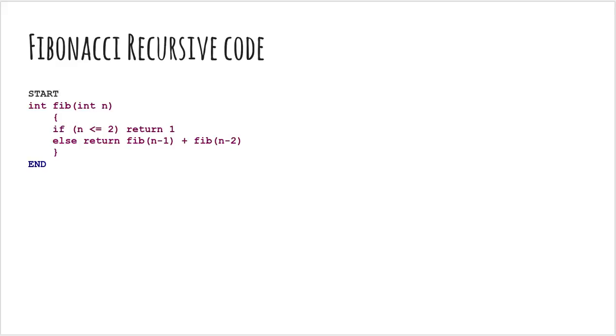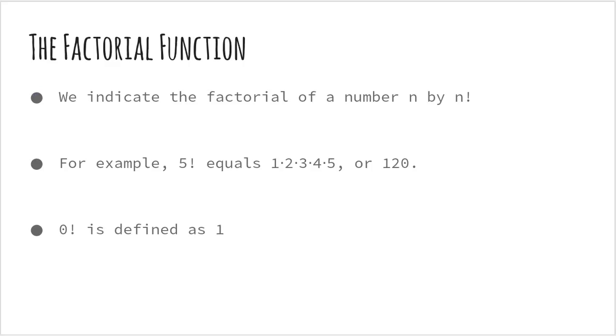So, we have a base condition that if n is less than or equal to 2, return 1. This essentially means that we are initializing F(0) to 1 and F(1) to 1. And if it's a larger number, we return the Fibonacci of n-1 plus the Fibonacci of n-2 because every term is the sum of the previous two terms.